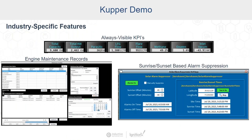Industry-specific functionality can be used to support the operational needs of the customer or to handle specific challenges in that industry. On the top, we see a KPI banner, which is always at the top of the screen, showing all the vital data points for the operation of a landfill gas to energy plant.